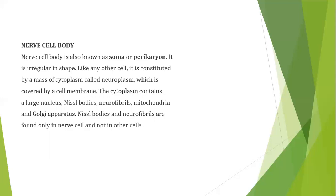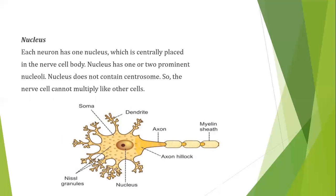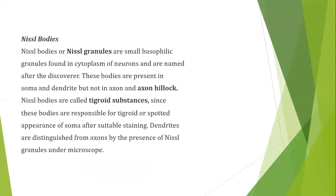Nissl bodies and neurofibrils are found only in nerve cells, not in other cells. Each neuron has one centrally placed nucleus with one or more prominent nucleoli. The nucleus does not contain centrosomes, so the nerve cell cannot divide or multiply. Nissl bodies are also known as Nissl granules — small basophilic granules in the cytoplasm of the neuron, named after their discoverer.